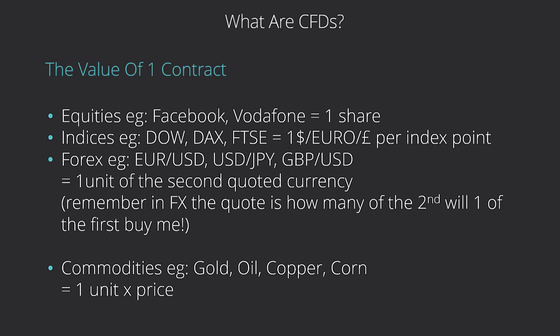For indices like your DAX or FTSE, it's going to be one dollar, one euro, or one pound per index point. So one CFD means that as the Dow moves up one point you're going to make one dollar, and as it moves down one point you're going to lose one dollar. Obviously it's based on the value of the asset at purchase and at sale, but that's an easy way of thinking about it.